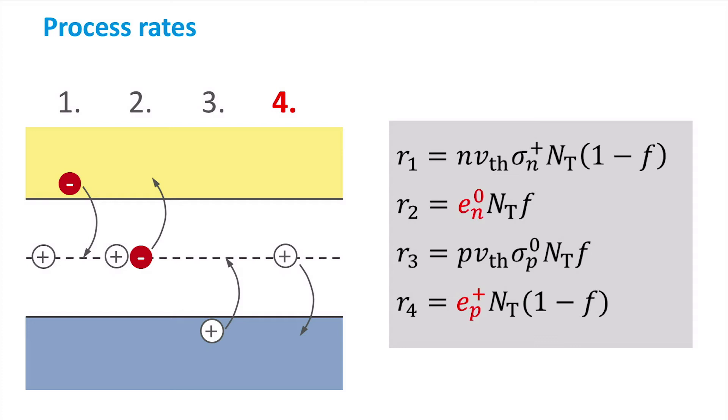Instead of the electron occupancy, the hole occupancy is now used, which is equal to 1 minus f instead of f.